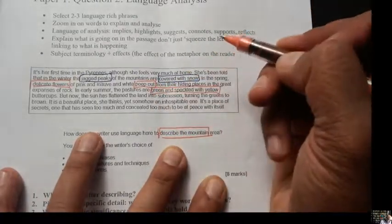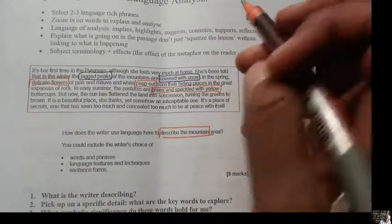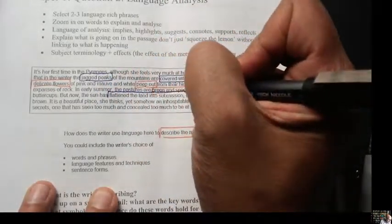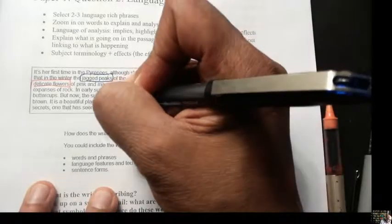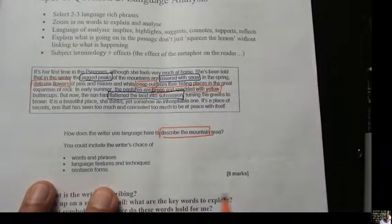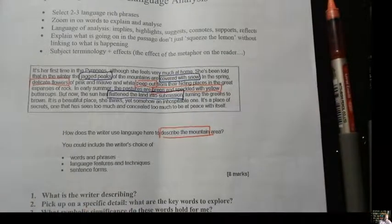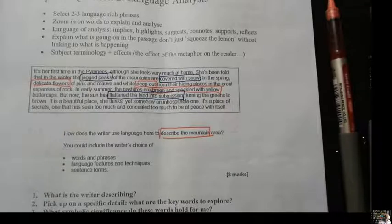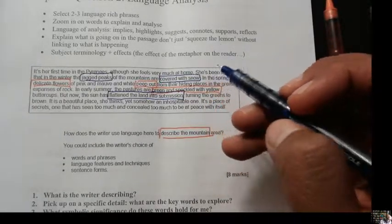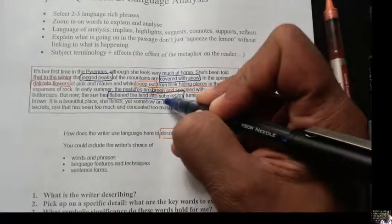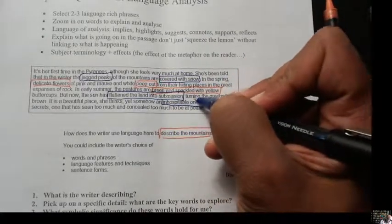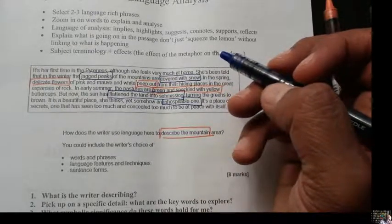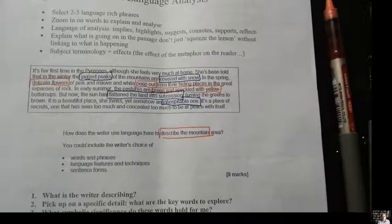I'm using different colors because those are quite positive words, but now the sun has flattened the land into submission, turning greens to brown. It's just burned up. The power of the sun has battered the ground into submission. It's a beautiful place, she thinks, but somehow an inhospitable one. It's not one that's welcoming. It's a place of secrets that's seen too much and concealed too much to be at peace with itself.